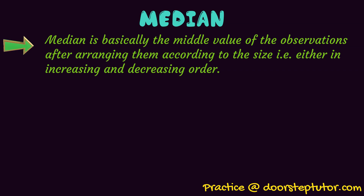Let's say we have observations regarding the marks of students in a class — 10 students are getting 50 marks, 20 are getting 60 marks, and so on. So the observations are the number of marks that the students are getting. The middle value would be the value of the observations after arranging them according to their size.